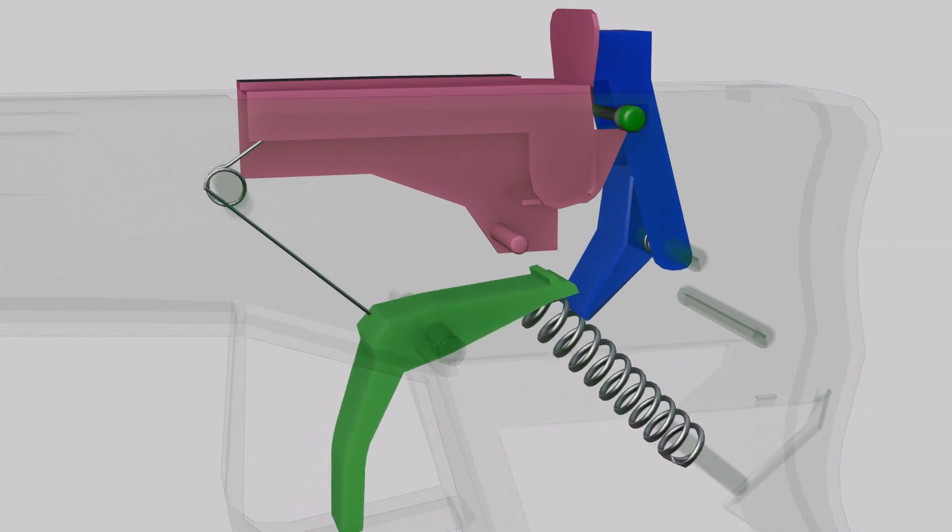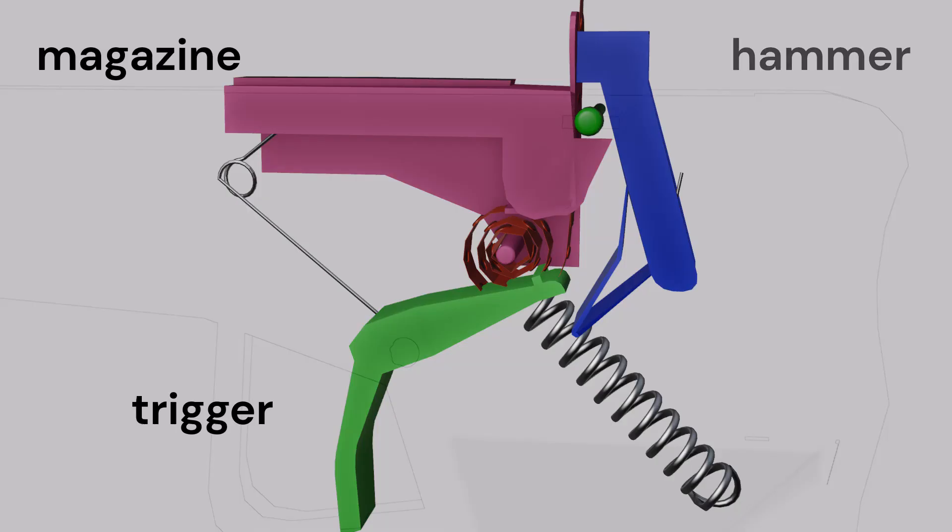The hammer moves against spring force. After detaching the link, the hammer will burst the roll caps.